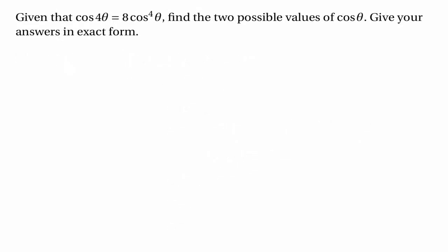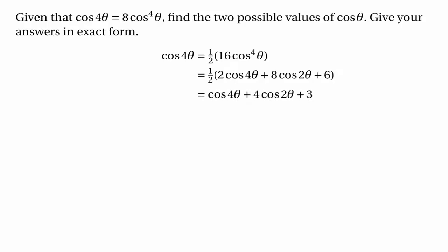The next part says: given that cos 4θ equals 8 cos⁴θ, find two possible values of cos θ in exact form. So we've got the equation cos 4θ equals a half of 16 cos⁴θ, and we've just worked out an expression for the right-hand side: it equals a half of (2 cos 4θ + 8 cos 2θ + 6), or more simply cos 4θ plus 4 cos 2θ plus 3. Looking at both sides, the cos 4θ terms cancel out, so we need 4 cos 2θ plus 3 equals zero.